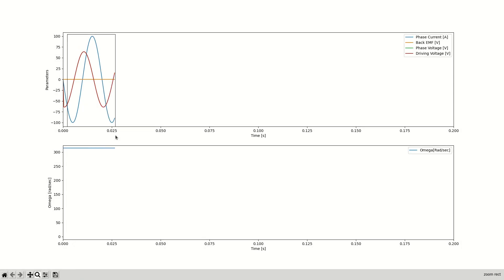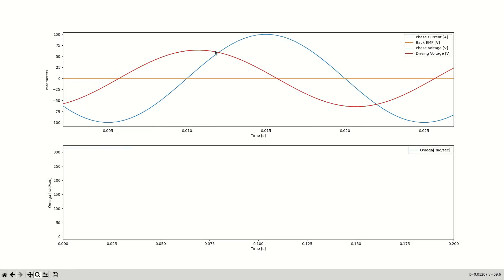Okay, based on the impedance of the motor at this speed, this is the voltage needed to achieve the desired current amplitude. We see that the phase voltage and the driving voltage are identical, since there's no opposing back EMF.